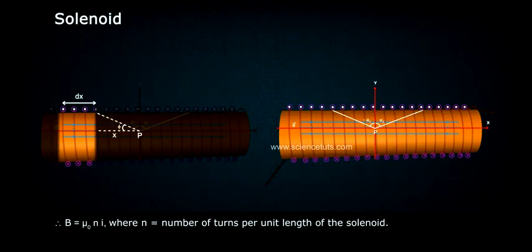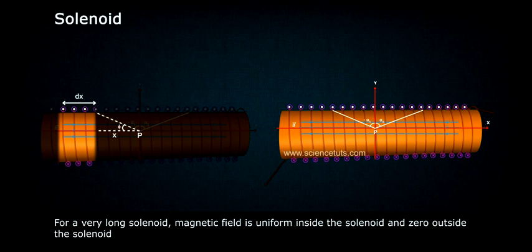Therefore, B equals μ₀ i n, where n equals number of turns per unit length of the solenoid. For a very long solenoid, magnetic field is uniform inside the solenoid and zero outside the solenoid.